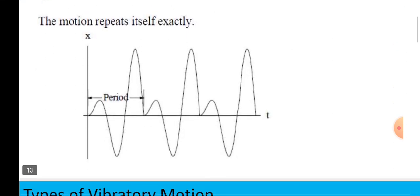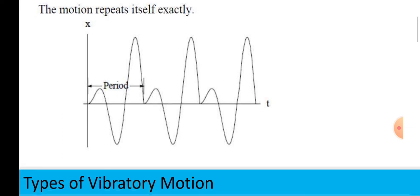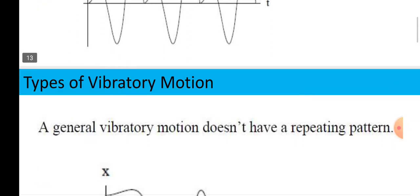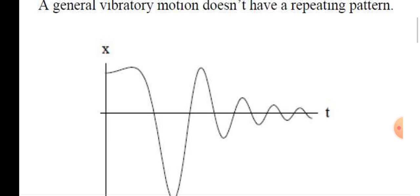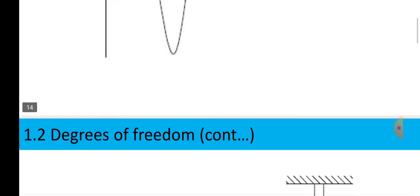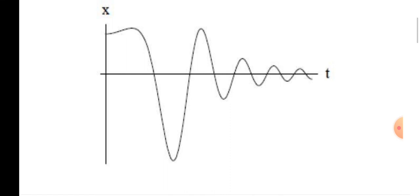Periodic motion, the motion repeats itself exactly. Now, here there are fluctuations but after that we get repetitions. General vibratory motion doesn't have repeat patterns. This is the final outcome. The types of vibratory system we have seen in this case.